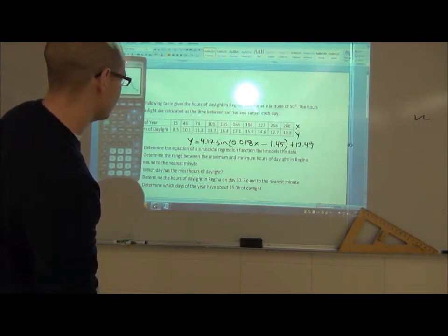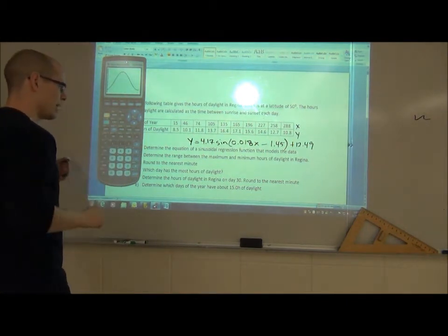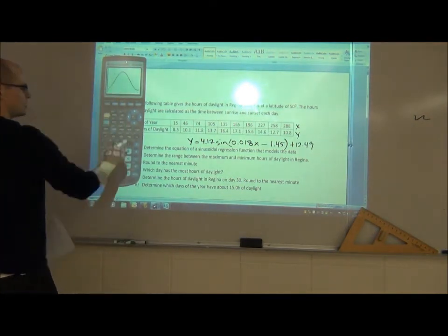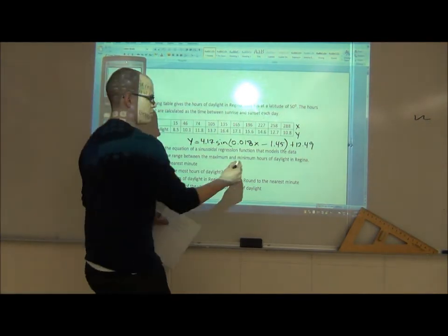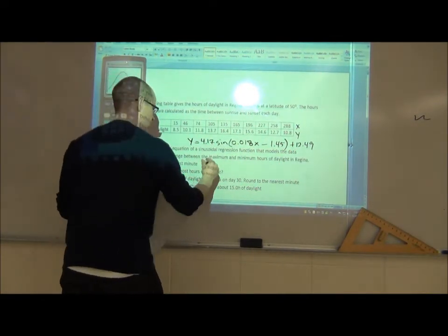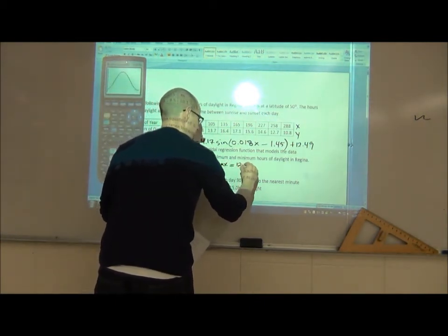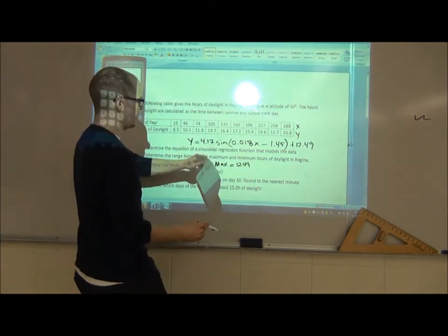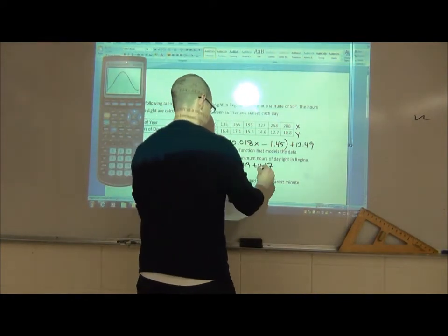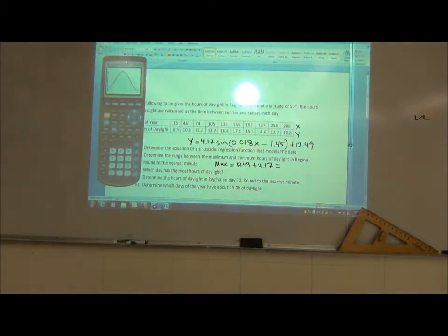So from there it wants me to determine the range between the maximum and minimum hours of daylight in Regina. Well, I showed you guys how to do this. A maximum value on the graph, you can go second trace max and second trace minimum, but there's a faster way to do it. Your maximum is your midline, which we cut down the middle, plus the amplitude. So my maximum here is going to be my midline plus the amplitude, because that's halfway and then up. So add the amplitude.